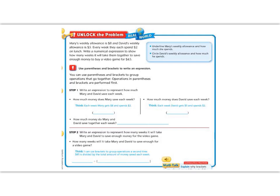The blue box is going to give us some helpful hints. It says, underline Mary's weekly allowance and how much she spends. I'm going to do Mary in one color. Mary's weekly allowance is $8, and she spends $2.